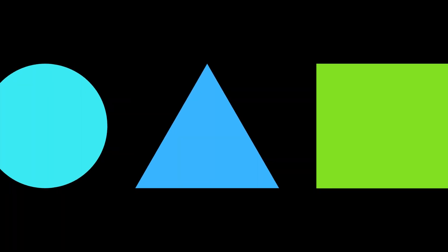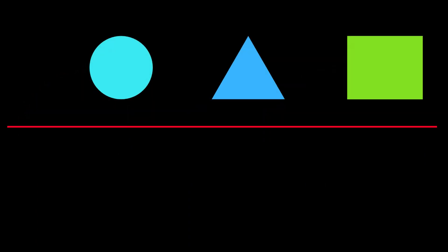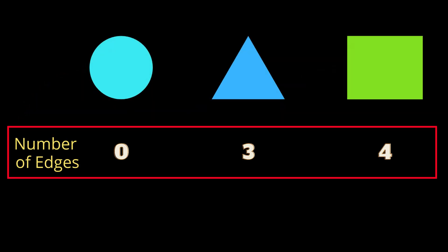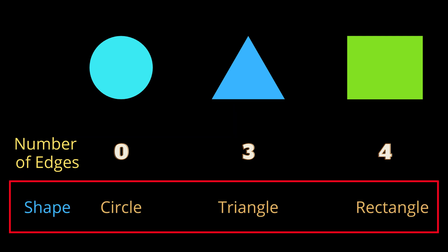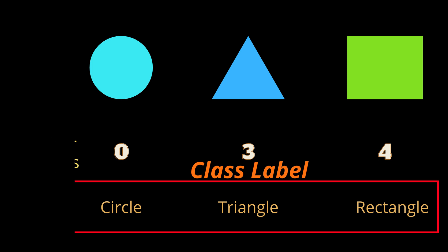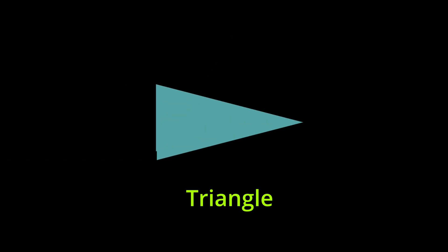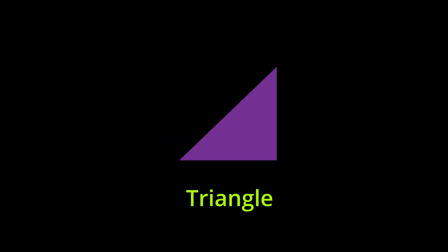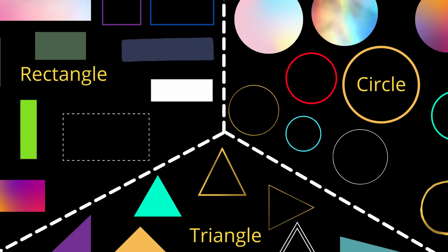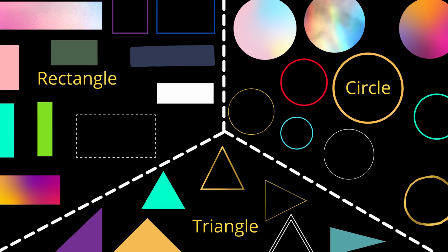Let us consider the shapes: circle, triangle, and rectangle. Each shape has a different number of edges. The number of edges becomes the feature of a classification model — zero edges makes it a circle, three edges a triangle, and four edges a rectangle. The shapes become class labels, and the model learns by associating which features belong to which label. If we give a shape three edges, the model identifies it as a triangle. This process of using labeled data to train the model is known as supervised learning, and the model then uses this learning to predict the output for future or unseen data.